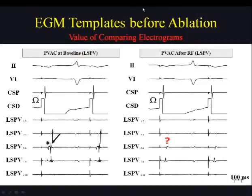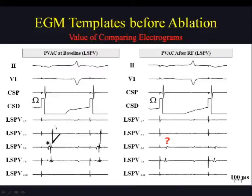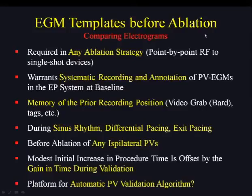For example, if you only look at a PVAC recording from the left superior pulmonary vein after ablation during coronary sinus pacing, it would be hard to know whether a split potential is a PV potential or only left atrial appendage. Having a template recorded in the same position gives you confidence that the potential was from the left atrial appendage and that all sharp potentials were eliminated. Without this template, validating PV isolation would be very difficult.